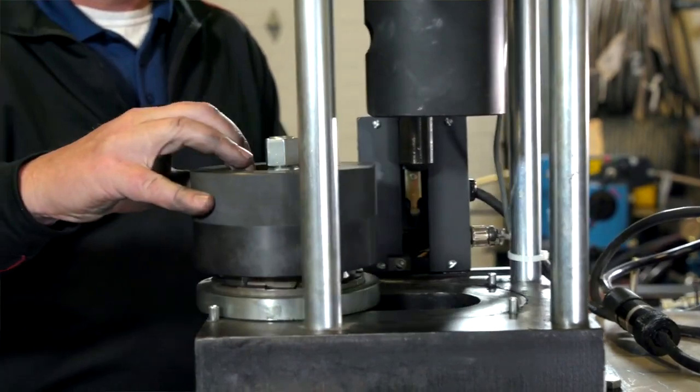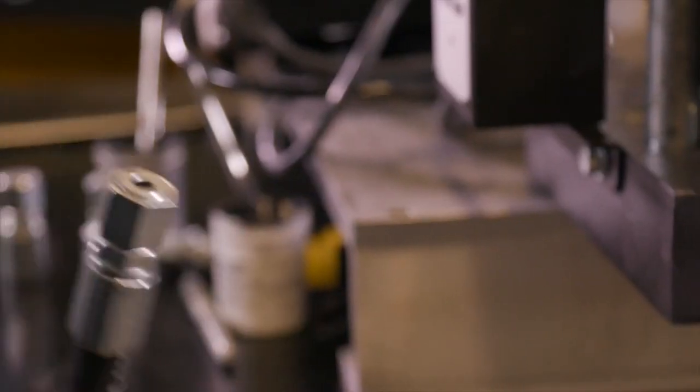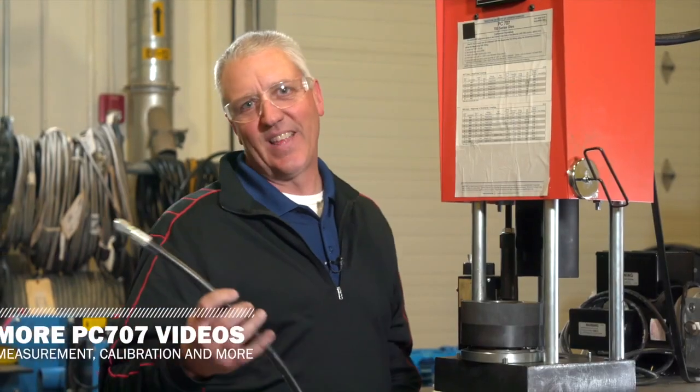Move the die cone and backup ring unit all the way forward and remove the assembly. Check and measure crimp diameter. It's that easy.